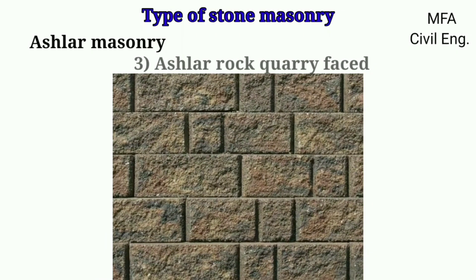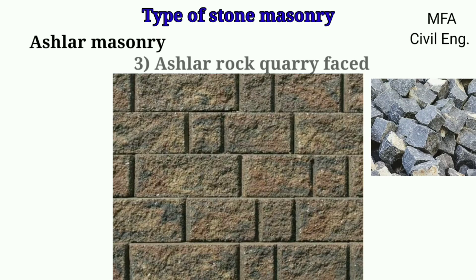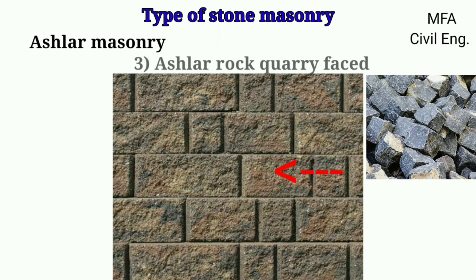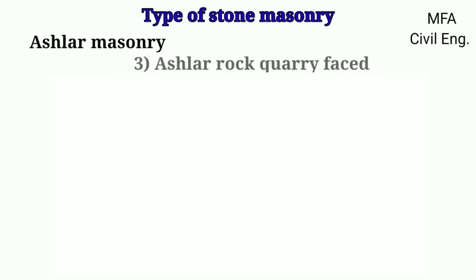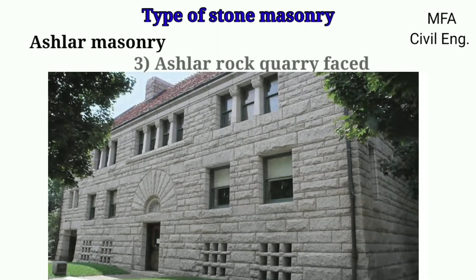In ashlar rock quarry faced masonry, the edges of the stones are made straight and sharp so as to have a thin mortar joint, but the faces are left in the condition as obtained from the quarry. This means the face of the stones will have a natural rock-like appearance. The advantage of this method is that it increases the architectural appearance while also reducing the cost of the building.